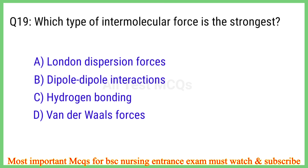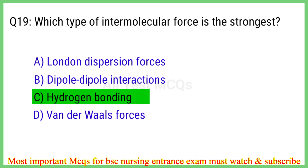Q19. Which type of intermolecular force is the strongest? The right answer is option C: Hydrogen bonding.